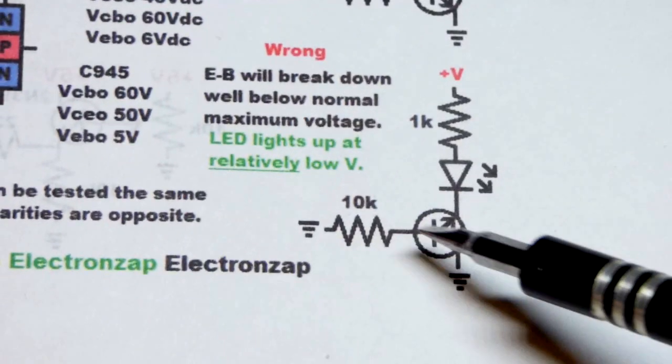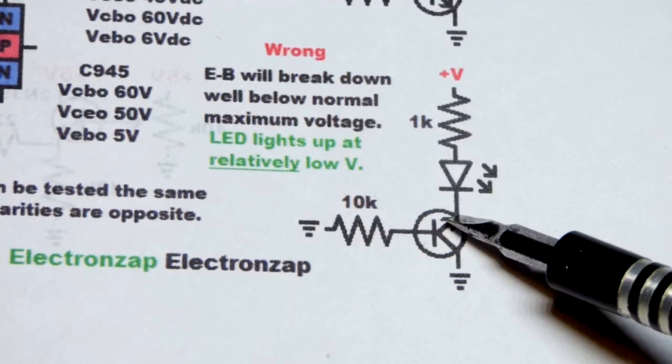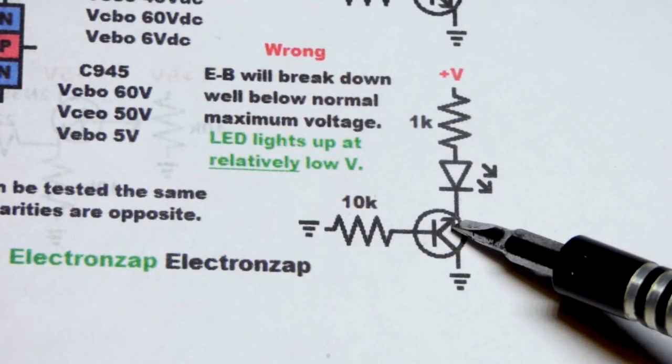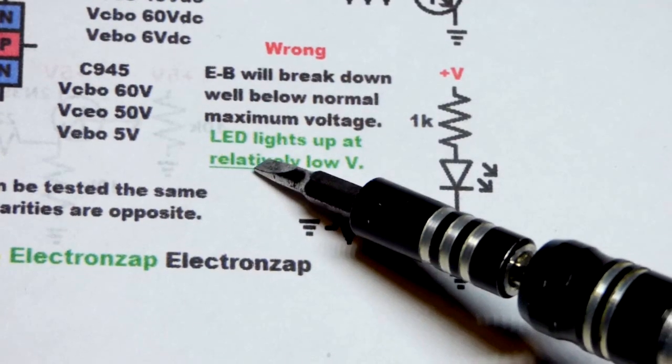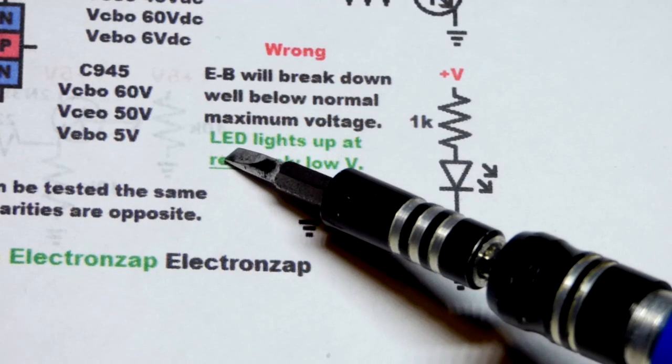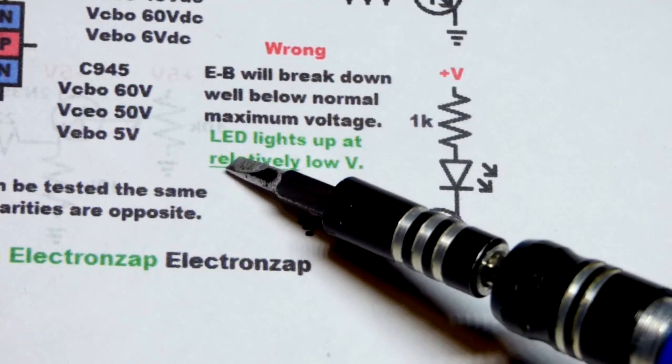Which it will if we have the pins lined up correctly. If we put the emitter on the more positive side right there, what's going to happen is that as I slowly raise the voltage up, it's going to be somewhere around 15 volts.